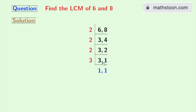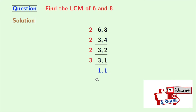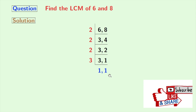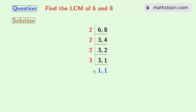Now, 2 does not divide any of these numbers, so we will try the next prime number, which is 3. Dividing, we get 1 in the first place and 1 remains the same in the second place. Now we have 1, 1. Keep in mind that once we get 1, 1 we have to stop our process, so we will stop right now.